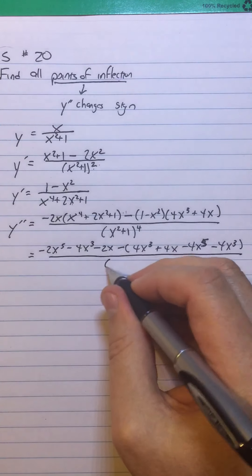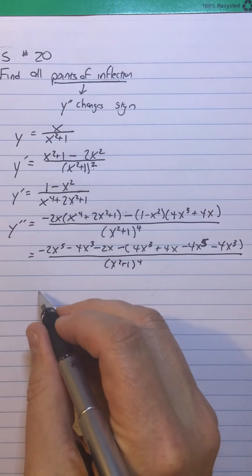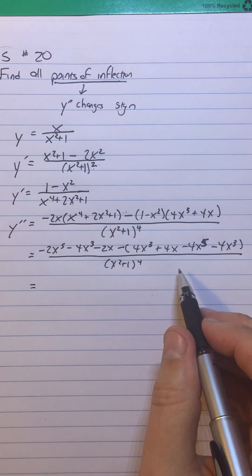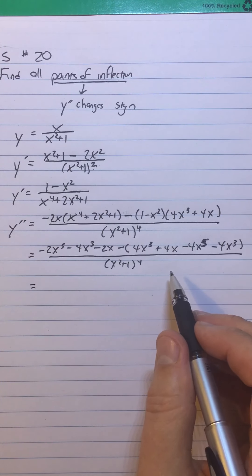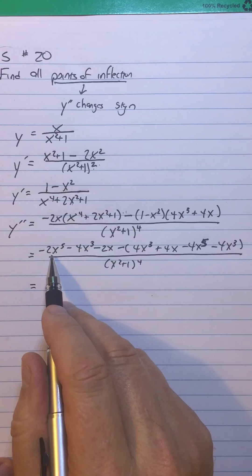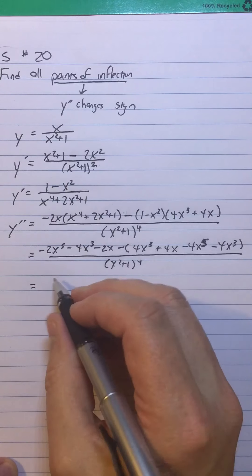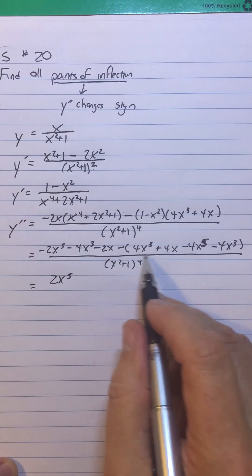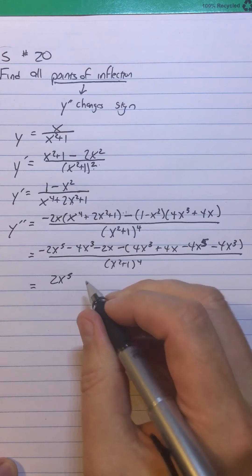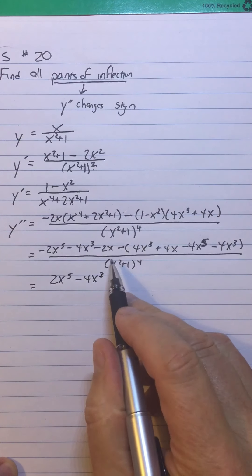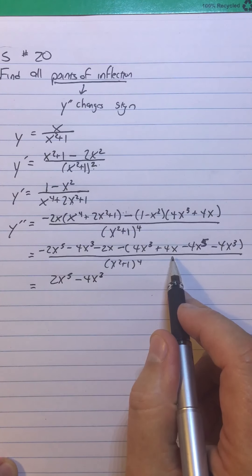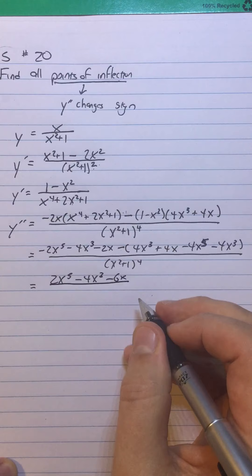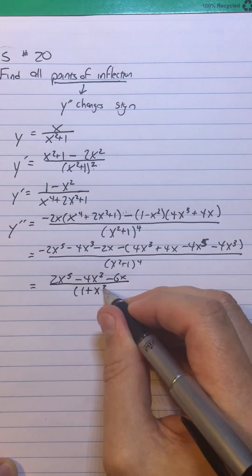All of this is over the denominator X squared plus 1 to the fourth power. Now let's combine everything in descending order of power. For the fifth-power terms: negative 2X to the fifth minus negative 4X to the fifth gives positive 2X to the fifth. For the cubed terms: the 4X cubed and minus 4X cubed cancel, leaving just minus 4X cubed. For the X terms: negative 2X minus 4X gives negative 6X. So Y double prime equals (2X to the fifth minus 4X cubed minus 6X) over (1 plus X squared) to the fourth power.